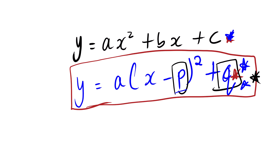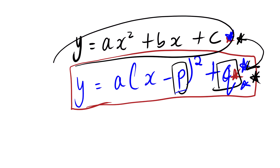In most question papers, there is a question where you are given an equation in the standard format, and then the question says to transform this equation or write it in bracket form. So basically, we are going to transform an equation from the standard manner to the bracket format, so that we can determine the maximum and the minimum. Today's lesson is based on how to do that transformation.